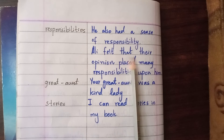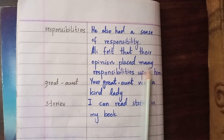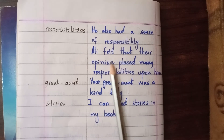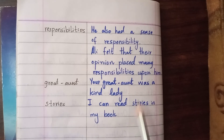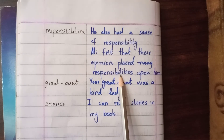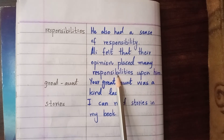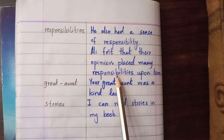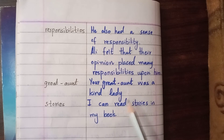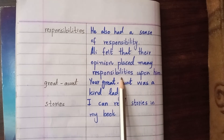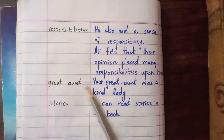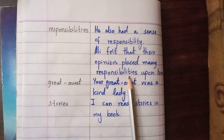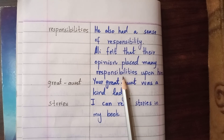When we use it as countable, for example: 'Ali felt that their opinion placed many responsibilities upon us.' When we assign specific responsibilities to anyone — for example, students have a responsibility to better themselves, reach school, and maintain their books — these are all small, countable responsibilities.